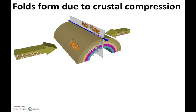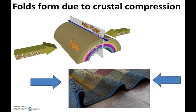As the earth's crust experiences compression, folds can form as the crust is shortened and thickened. This is analogous to pushing on the ends of an area rug and seeing the wrinkles that form on the rug. Commonly this occurs along zones of convergence, but can occur within a plate as well, as parts of the plate experience compression.